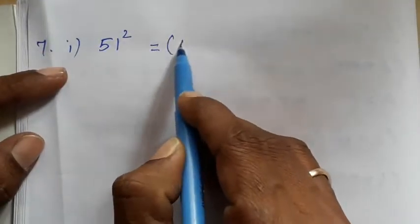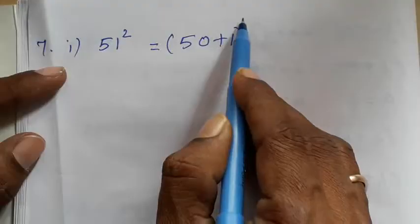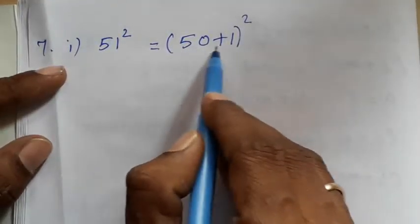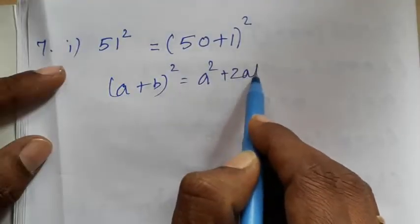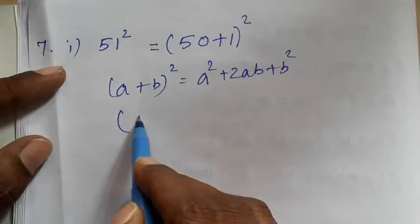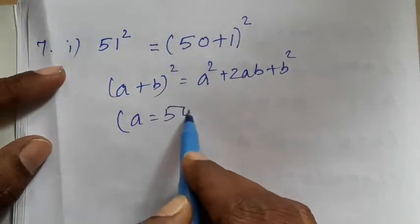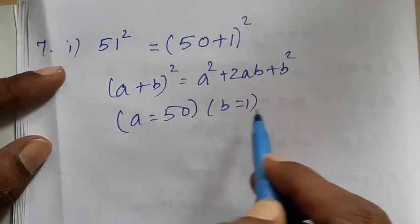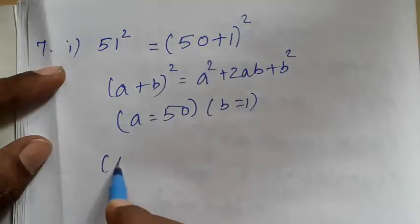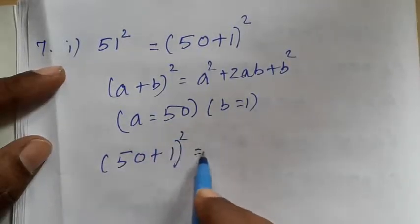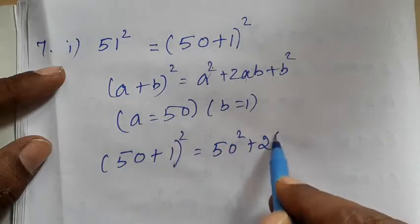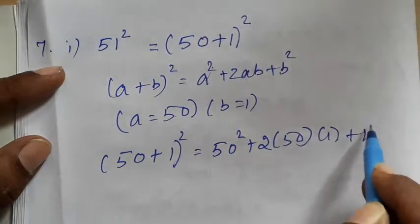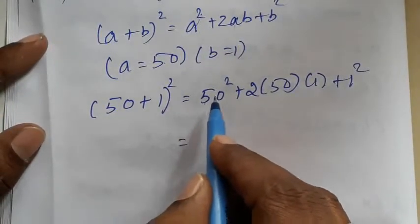We have to change it and the value is different. We all need to change it. What is in the formula? 50 plus 1 is the whole squared. What is in the square? 50 squared plus 2, 50 plus b, plus 1 is the whole squared. So 50 is the whole squared.